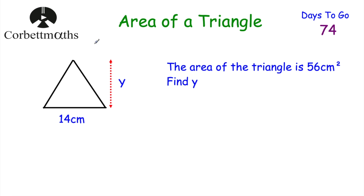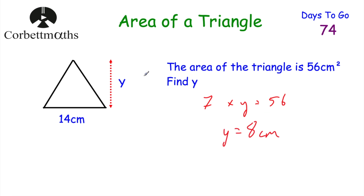The area of this triangle is 56 centimetres squared, the base is 14 centimetres, and we've been asked to find the height Y. Half the base times the height equals 56: half the base is 7, so 7 times Y equals 56. Since 7 times 8 equals 56, the height Y is 8 centimetres. Alternatively, you could double 56 to get 112 and then divide by the base of 14, giving 112 ÷ 14 = 8.